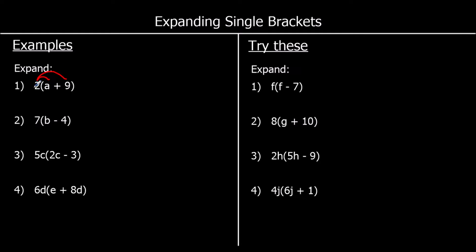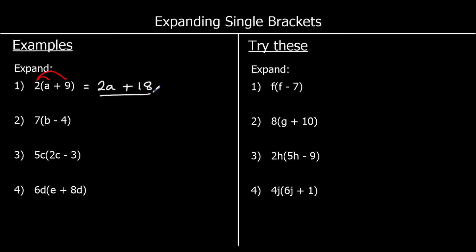So we've got 2 times a and 2 times 9. 2 times a we write as 2a. We don't write a times sign in algebra, so 2a means 2 times a. And we've got 2 times 9. Two 9s are 18, and it's a positive 18. So it's going to be 2a plus 18.